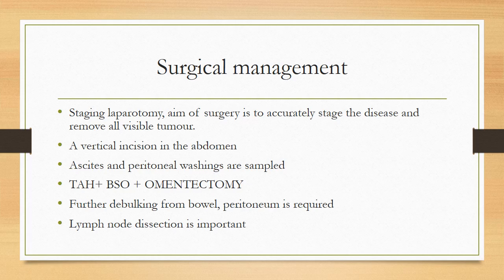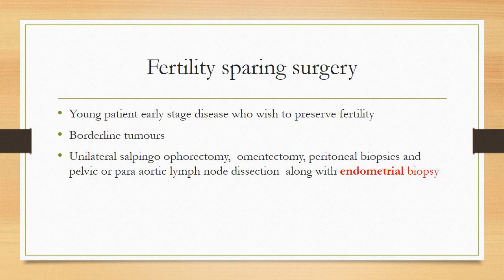Lymph node resection (not dissection) is an important part of the surgery. Fertility-sparing surgery is offered to young patients with early stage disease who wish to preserve fertility, and also in borderline ovarian tumors. This involves unilateral salpingo-oophorectomy, omentectomy, peritoneal biopsies, pelvic and para-aortic lymph node resection, and endometrial biopsy — because 10% of endometrioid cancers have associated endometrioid carcinoma of the endometrium, which we must not leave behind.